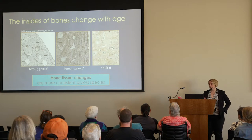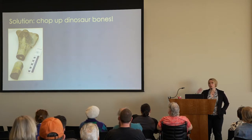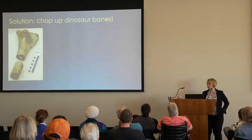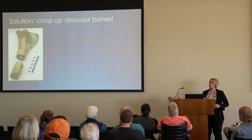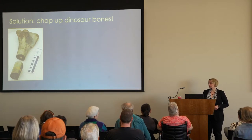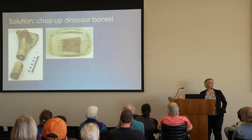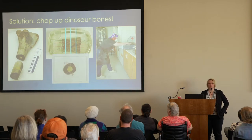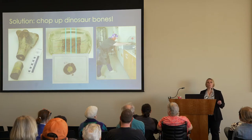Our solution is to chop up these bones and look at the bone tissues inside. We take a chunk out, embed it in clear polyester resin, make slices on a giant saw, mount those to a slide, then grind them on a spinning disc with sandpaper — polishing thinner and thinner until you can see light through it under a microscope. A lot of these features are too small for a CT scanner, which is why we can't look at them without destroying the bone.